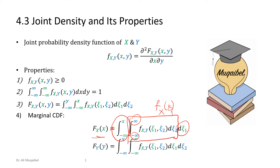We can do the same for F of Y. Now we are going to marginalize X. You can see that the green limits now go from minus infinity to plus infinity, and with that we get the marginal PDF with respect to Y. The external integration is then to go from PDF to CDF. These are some properties for the joint density function.